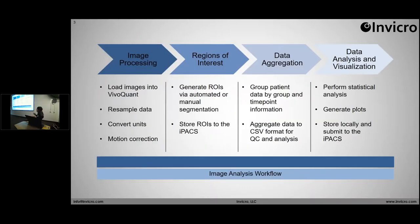Everyone has a diagram — this is mine, and it comes up quite frequently in this presentation. I broke up an image analysis workflow into four major sections. The first being image processing: you load in your data, do whatever kind of pre-processing routine you need — resampling, converting units, registration, motion corrections, things like that. Once you have your pre-processed data, you want to segment the regions of interest and turn that into quantifiable information, aggregate that data, and then analyze it using statistics and visual resources like plotting.